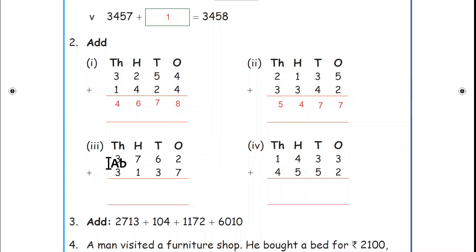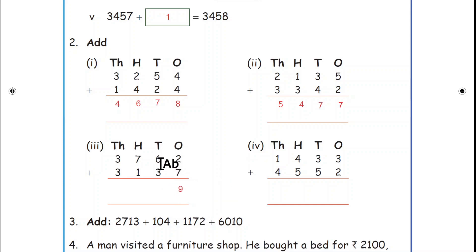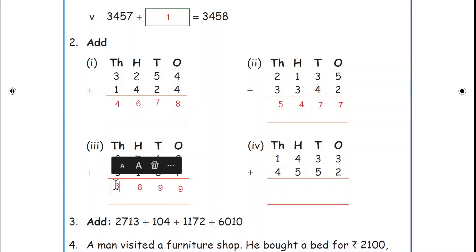Move to the third sum. Four digits are given: ones, tens, hundreds, thousands. Ones place: 2 plus 7 = 9. Tens place: 6 plus 3 = 9. Hundreds place: 7 plus 1 = 8. Thousands place: 3 plus 3 = 6.